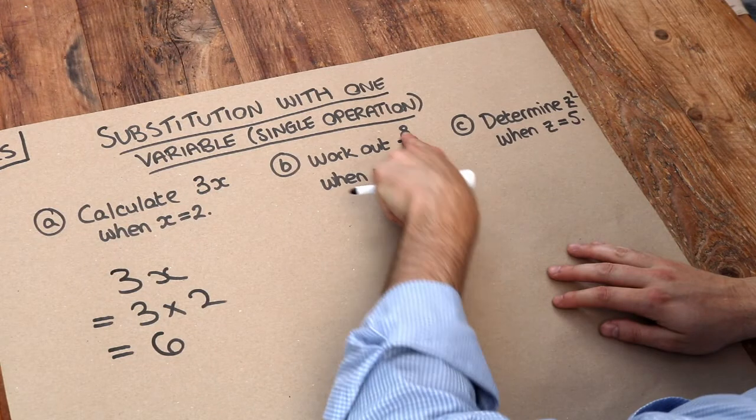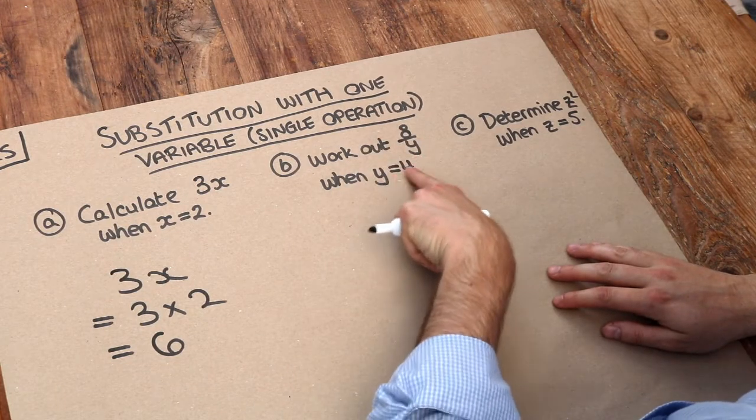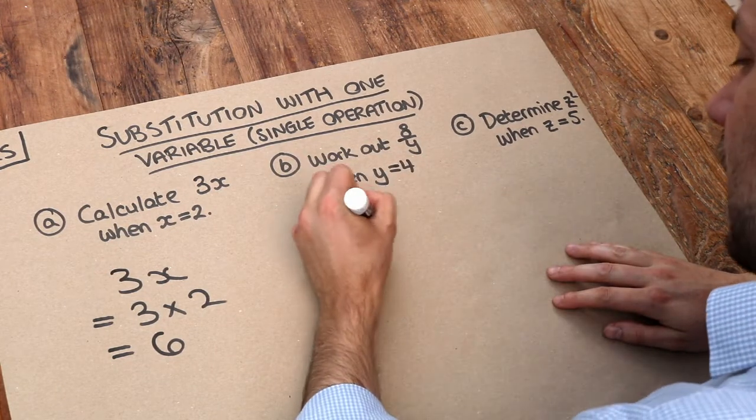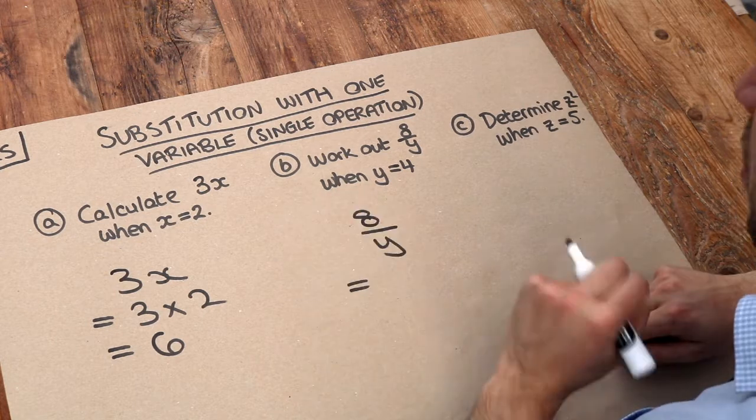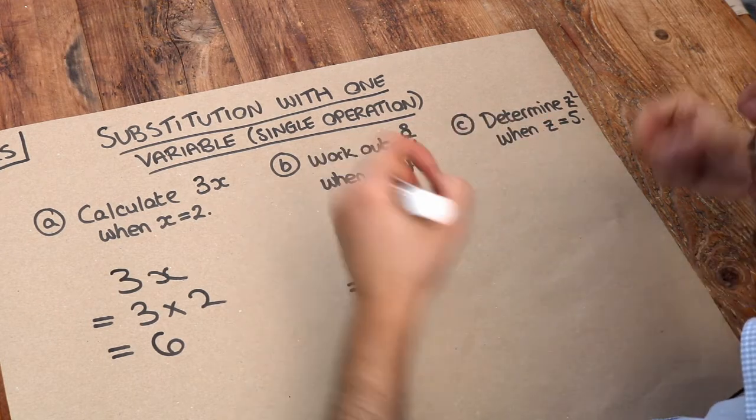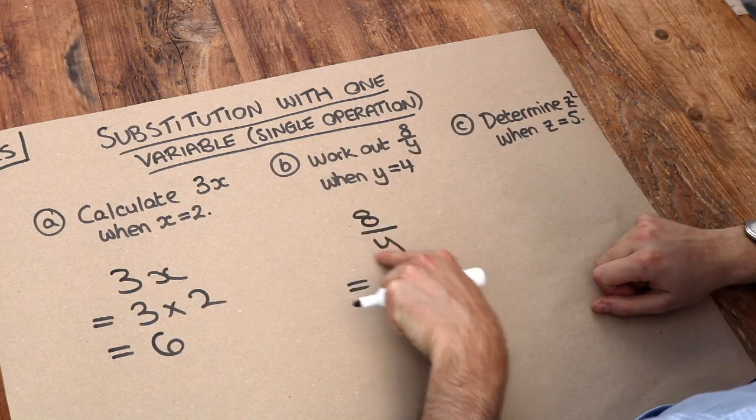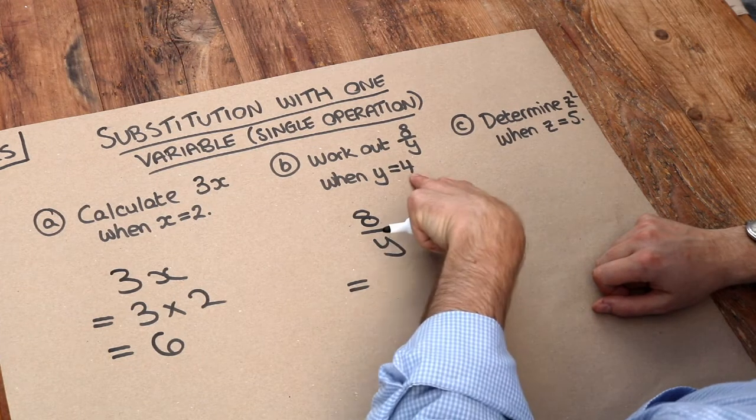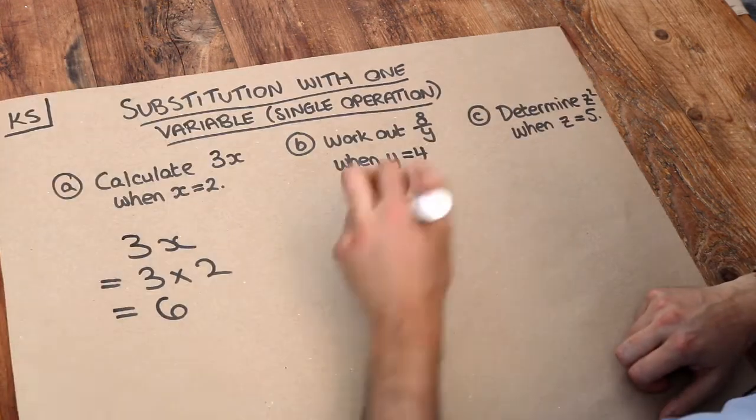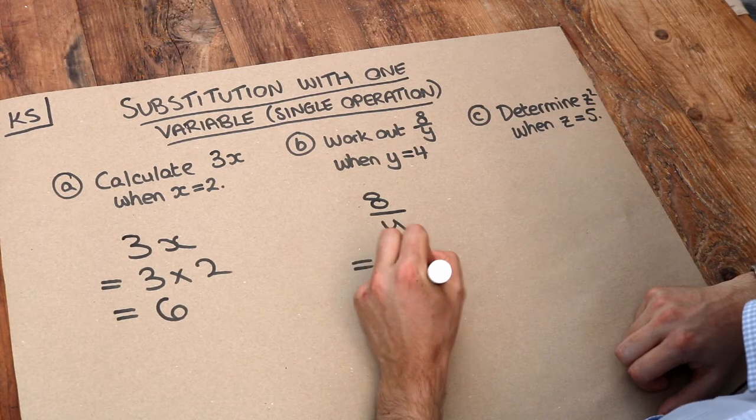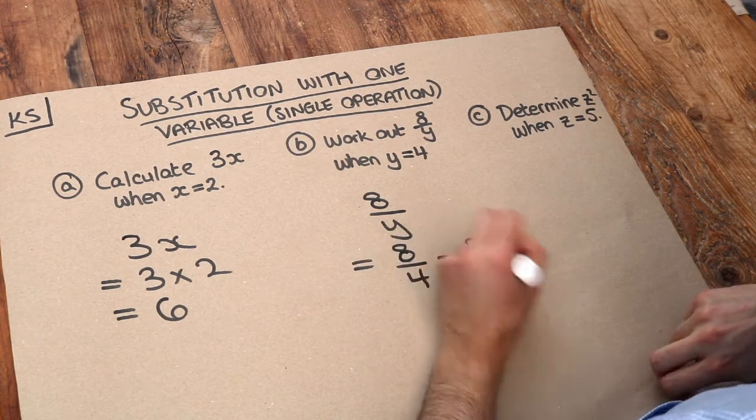What about the second one? Work out 8 over y when the value of y is 4. So again let's write the expression first and then we just need to replace, that is substitute, each occurrence of the variable here y with 4 because y is worth 4. So we do 8 over 4. 8 divided by 4 is 2.